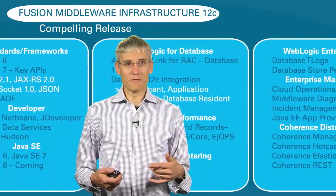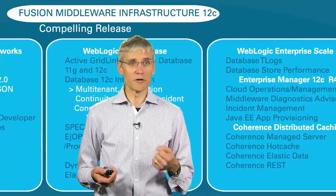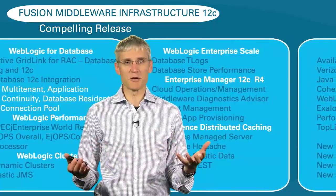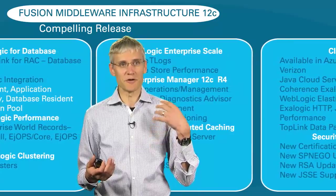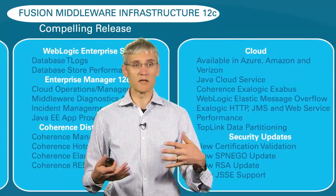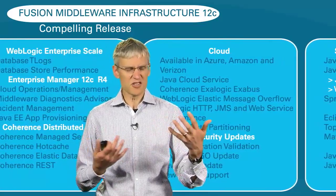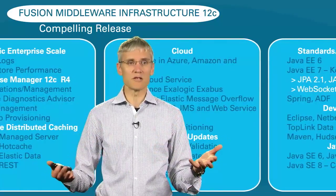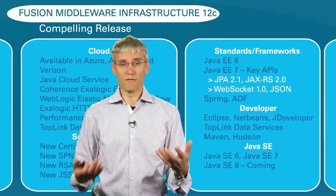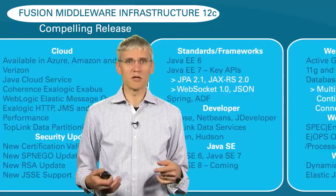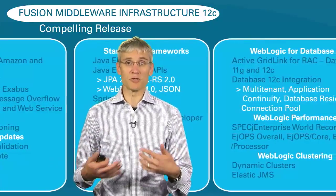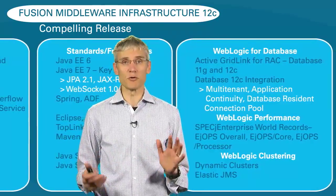To give you a flavor of what's in 12.1.3: it is a massive amount of capabilities — literally hundreds upon hundreds of features. I've cherry-picked some of the highlights, whether it be in the standards area with Java EE 6 and even some early capabilities around Java EE 7. In the developer area, making it great for the development lifecycle — not only around mobility, but also just the tooling, the development lifecycle, Java SE and the latest Java SE releases, and integration with the database. We are a leader in databases and have great integration with Oracle. Also: performance, enterprise clustering and scalability, distributed caching with Coherence, manageability with a major new release of Enterprise Manager 12C, and of course cloud — along with security integration and more.